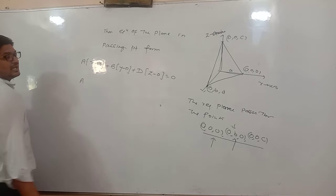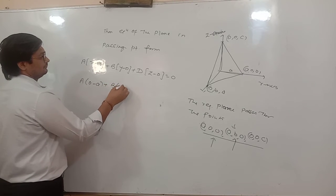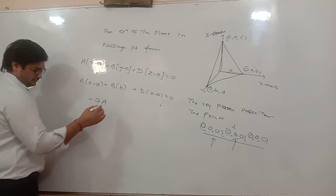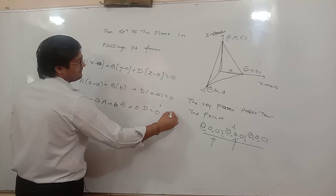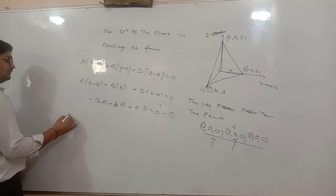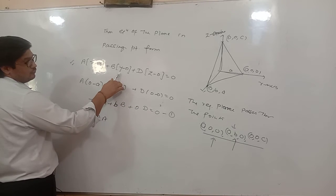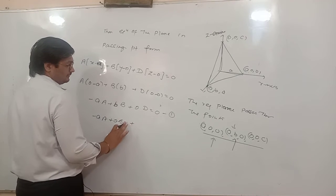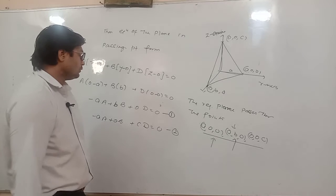X की जगह 0 रखा, Y की जगह B रखा, और Z की जगह 0 रखा। Overall equation आई: minus A into A, then plus B into B, and then plus 0 into D equals 0 — this is equation number 1. Similarly, the third point will also satisfy the equation of the plane.